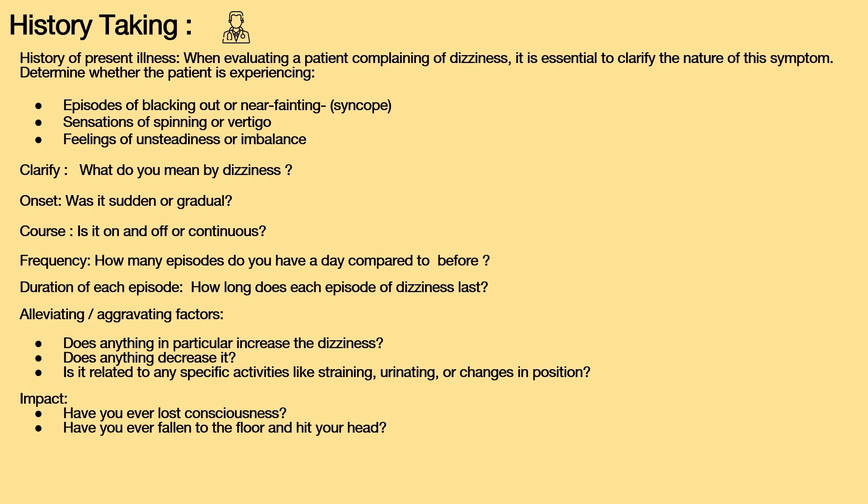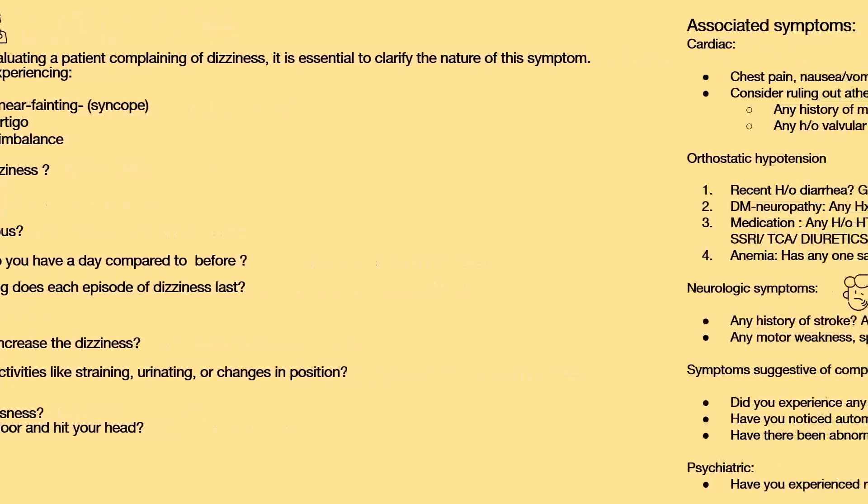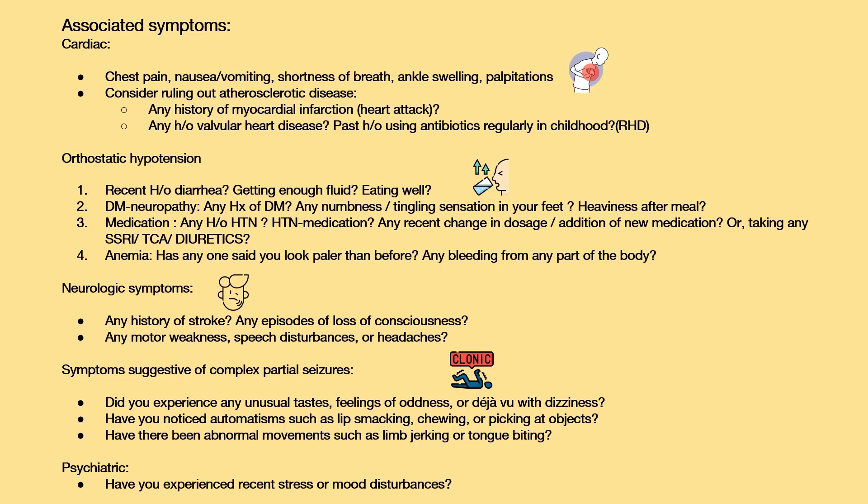Clarify what the patient means by dizziness. Ask about the onset — was it sudden or gradual? How would you describe the course? Is it on and off or continuous throughout the day? How frequently do these episodes occur, and have there been changes in frequency? Describe the duration of each episode, any aggravating or alleviating factors, and whether it occurs with specific activities such as straining, urinating, or changing position. Has the dizziness ever caused loss of consciousness or a fall?